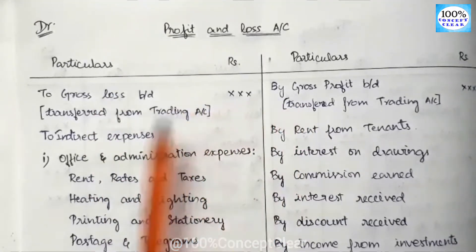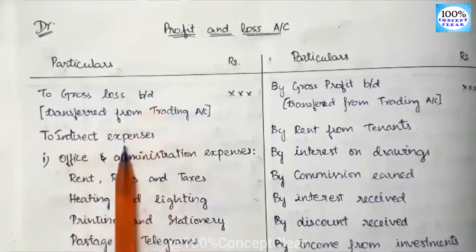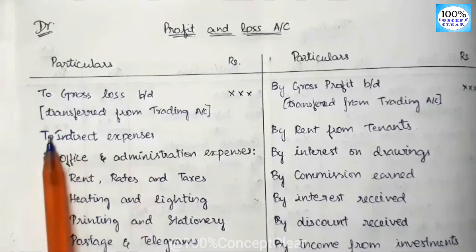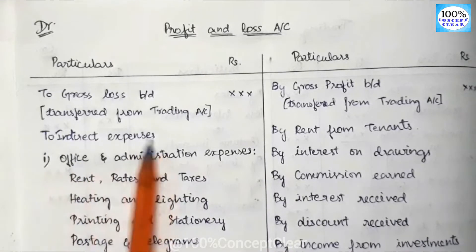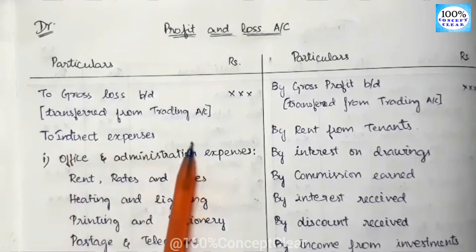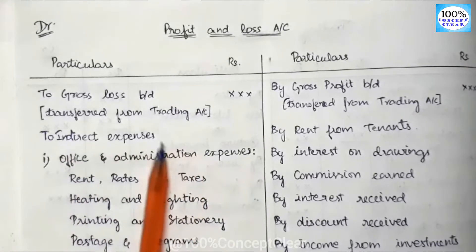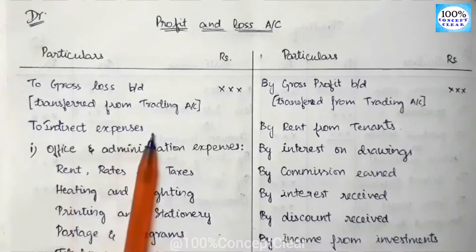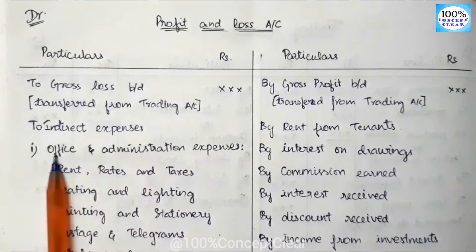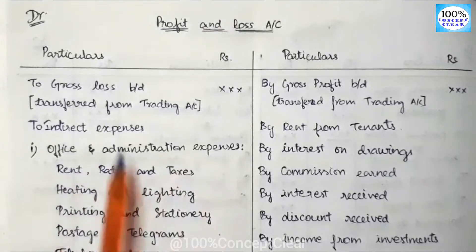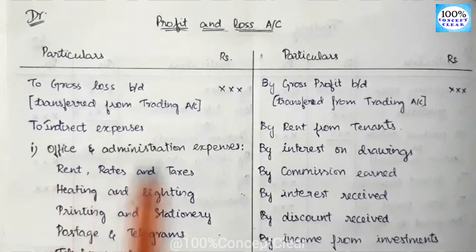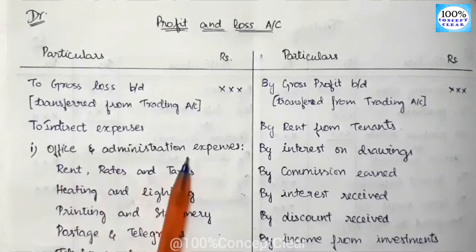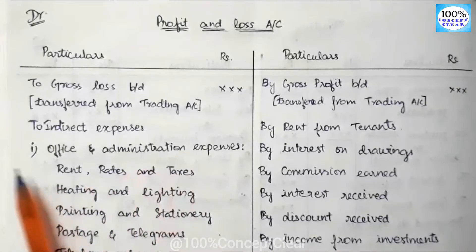Let's look at the next item. After gross loss, we have indirect expenses. What are indirect expenses? The first category is office and administration expenses. When we return to the office and administration range, we have the direct expenses; the secondary expenses are the indirect expenses.